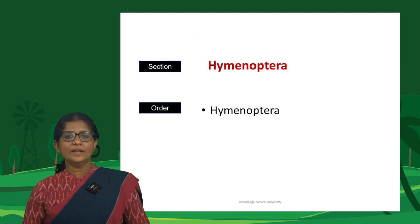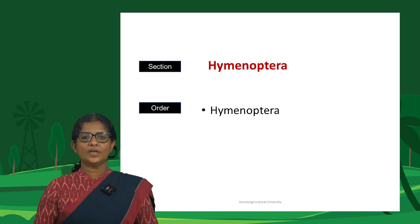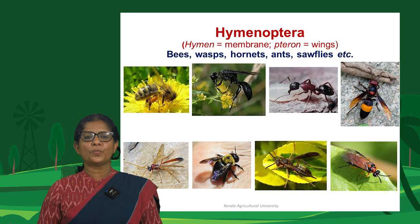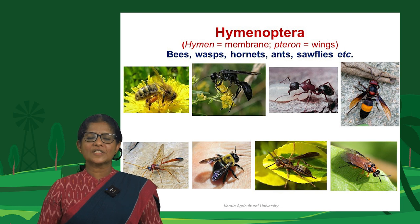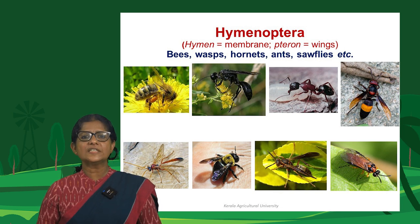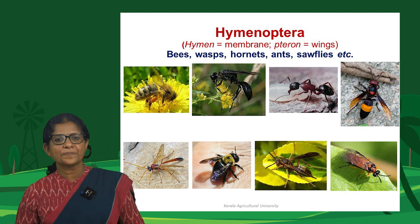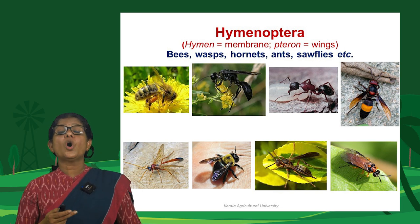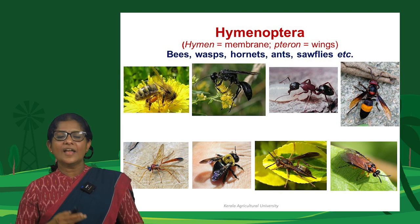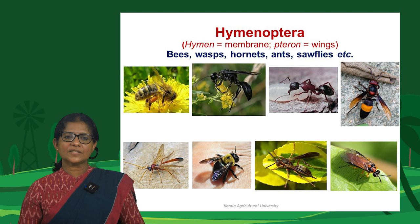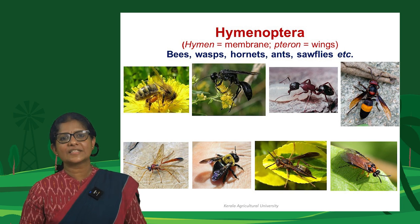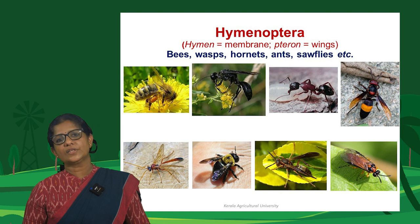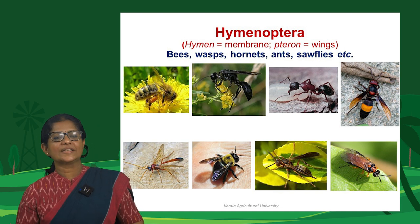Section Hymenoptera includes only one order: Hymenoptera (bees, wasps, hornets, ants, sawflies). It is a highly diverse, highly evolved, and most intelligent group of insects, many of which are eusocial. The name Hymenoptera comes from 'hymen' (membrane) and 'ptera' (wings), as they have membranous wings.